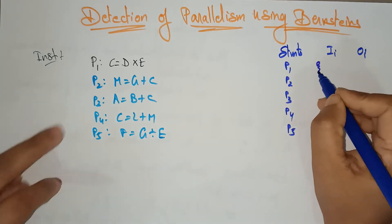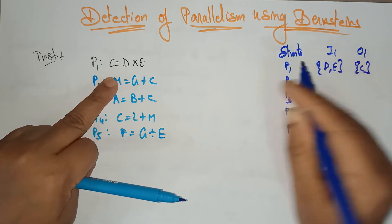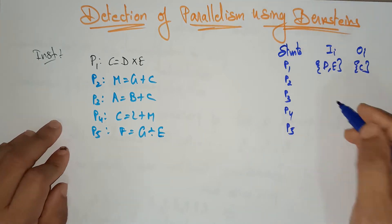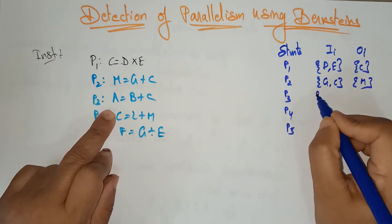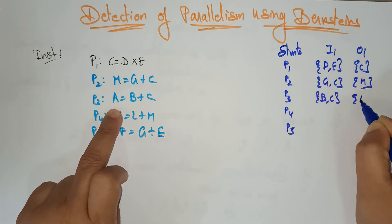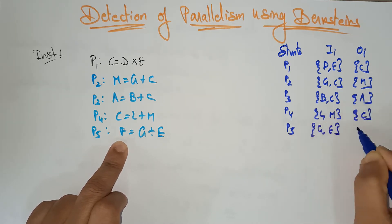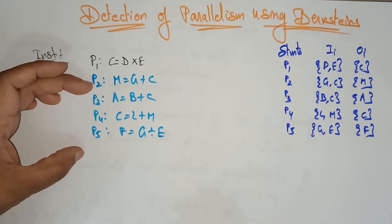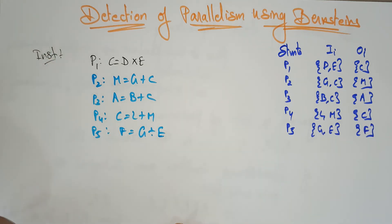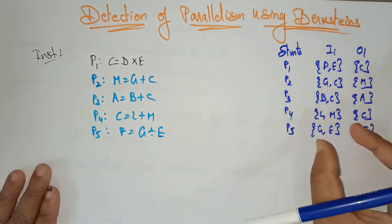By looking at the instructions you can easily write the input and output items for each process. For P1, input is {D, E} and output is {C}. For P2, input is {G, C} and output is {M}. For P3, input is {B, C} and output is {A}. For P4, input is {L, M} and output is {C}. For P5, input is {G, E} and output is {F}. Our main goal is to find which two processes can execute in parallel without any conflicts.